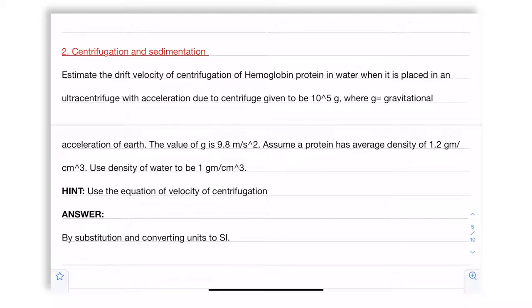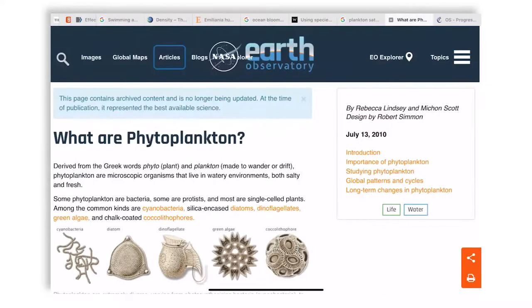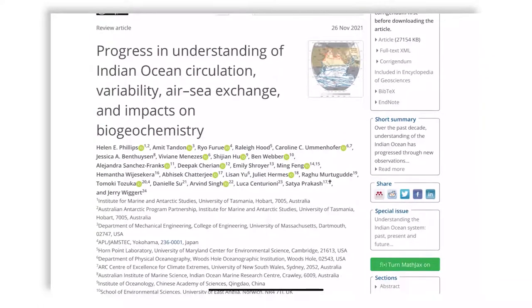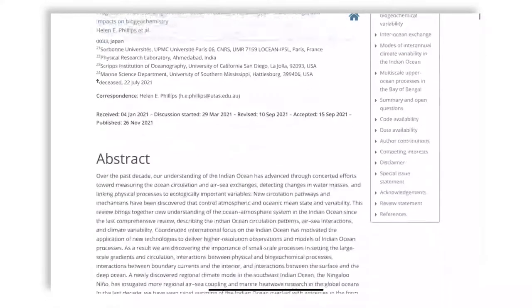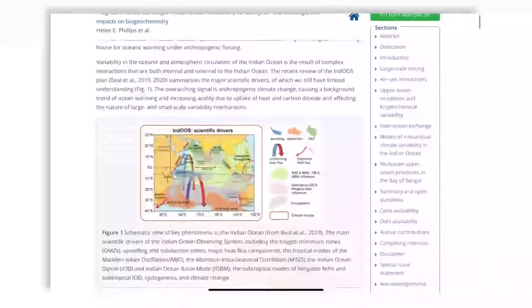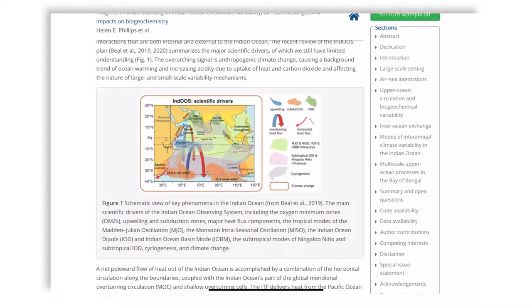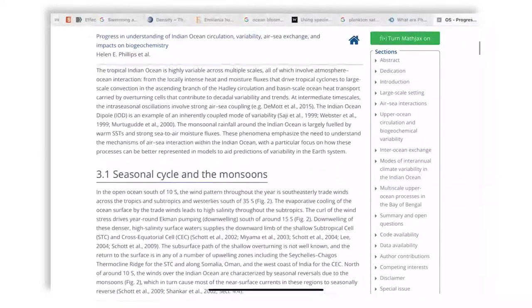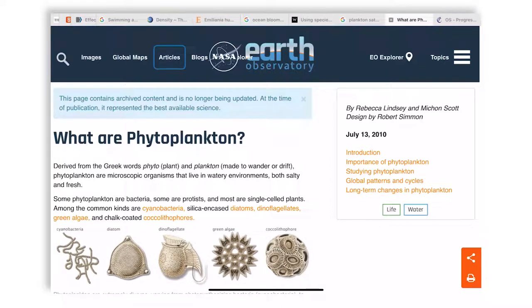The last question relates to ocean science and something called phytoplankton. So you will find that the air-sea exchange of gases, biogeochemistry, the planetary food web depends strongly on something called phytoplankton. And in this particular paper you see the Indian Ocean and detailed geochemistry of air-sea interactions. But we are going to focus on something called phytoplankton which stands for phytos, plant, plankton made to wander or drift. They are microscopic organisms. They live in both salt and fresh water.